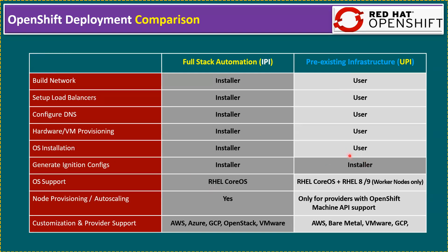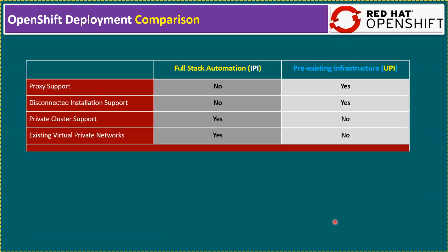For UPI (pre-existing infrastructure): network, load balancer — everything must be created by the user, not by the OpenShift installer. Only the ignition configs are handled by the installer. OS support allows CoreOS or RHEL 8 and 9, though the recommendation is that master nodes use CoreOS and worker nodes have flexibility to use RHEL or CoreOS. Regarding key differences: proxy support — IPI does not support it, UPI does. Disconnected installation — IPI is not supported, only UPI. Private cluster support — IPI is supported, UPI is not. Existing VPN support — IPI supports it, UPI does not.